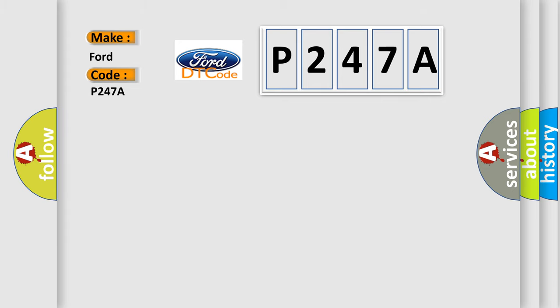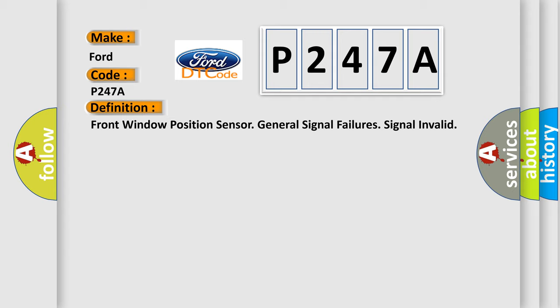The basic definition is: Front window position sensor general signal failures, signal invalid. And now this is a short description of this DTC code.